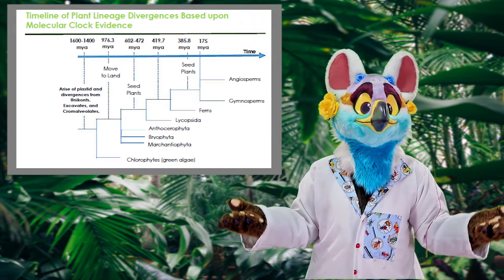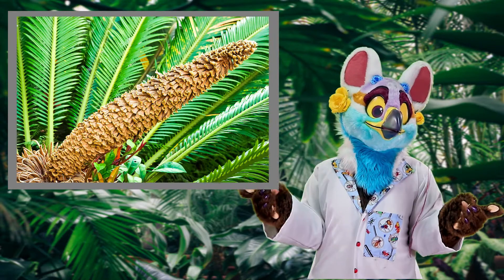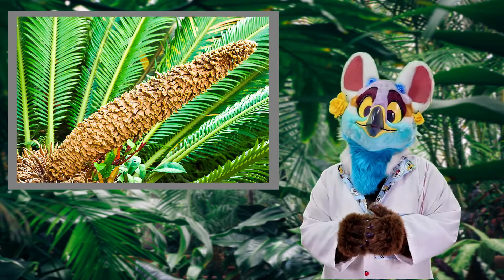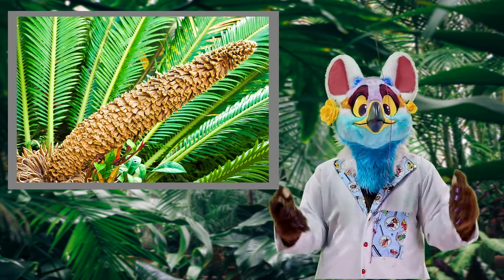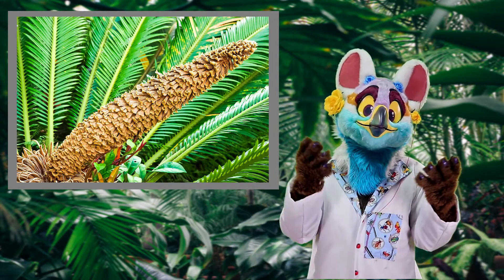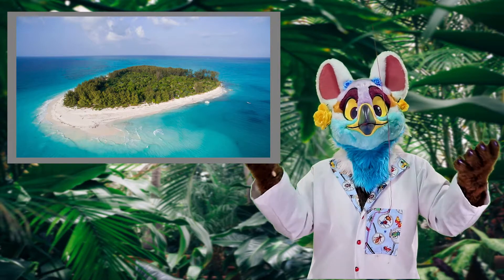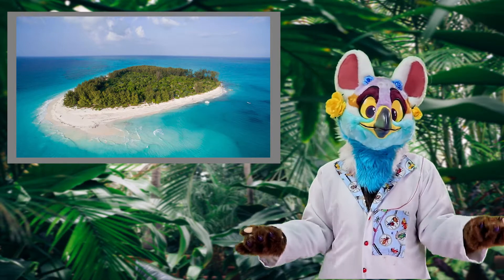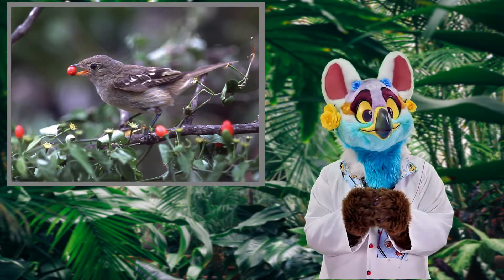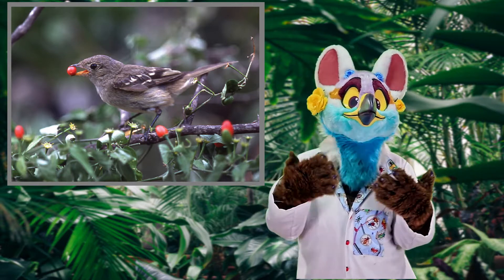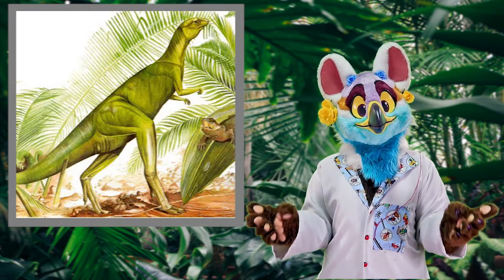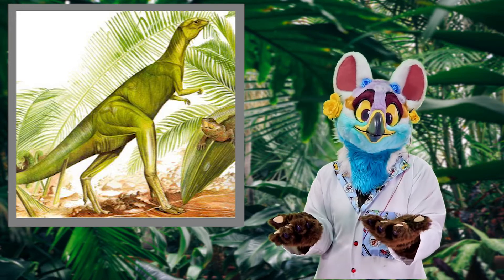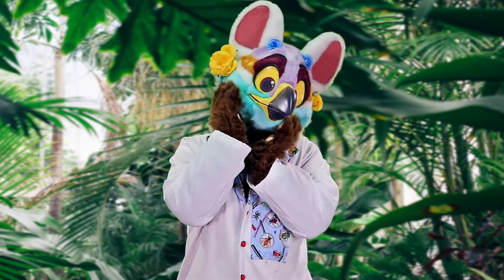There are numerous theories about how the angiosperms came to be. One is that a species of seed-bearing fern was the common ancestor, which could have had multiple whole genome duplications, supporting traits such as more encased seeds in the form of fruit. Another theory is that they evolved on an island — islands are usually diversification hot spots because of their limited competition and unique niches. There's even a theory that there was strong selective pressure for fruit because of the large abundance of herbivorous dinosaurs. But we're still trying to find out which one of these is most accurate.